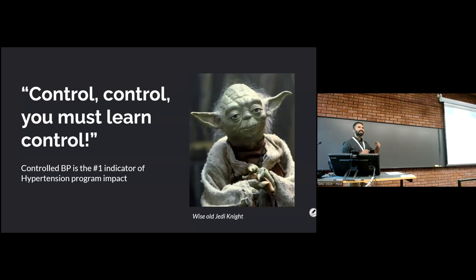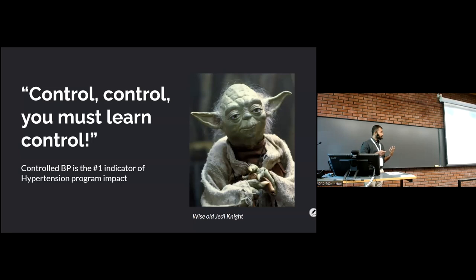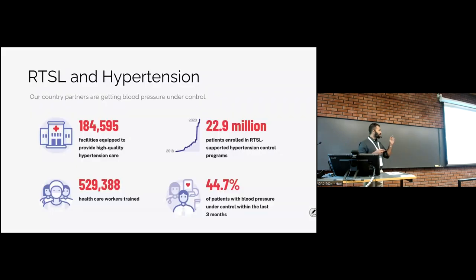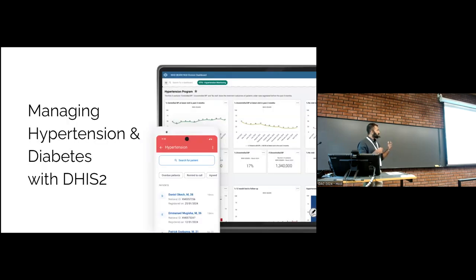If you watch Star Wars, you'll recognize Master Yoda's quote: 'Control, control, you must learn control' — because hypertension control, blood pressure control, is the number one indicator for how well a hypertension program is doing. Hypertension kills more people than all infectious diseases combined. If we can increase blood pressure control from the current global 15% to just 50%, we can save 100 million lives in the next 30 years. Currently, there are 22.9 million patients enrolled in Resolve-supported programs, and 44.7% of those patients have their BP under control.